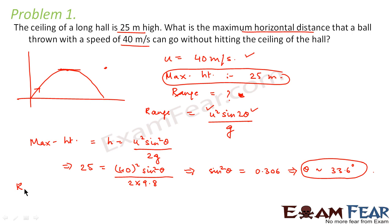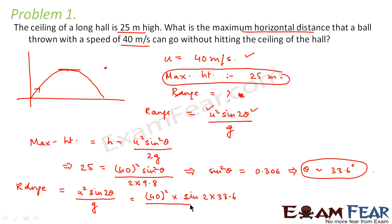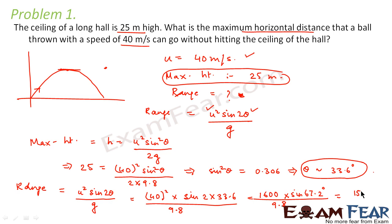Using this value of θ, Range = u²·sin2θ / g = (40²·sin(2 × 33.6°)) / 9.8 = (1600 × sin67.2°) / 9.8. This comes out to be approximately 150.53 meters. So that is the maximum horizontal distance the ball can cover. We simply used the formula and substituted the values.